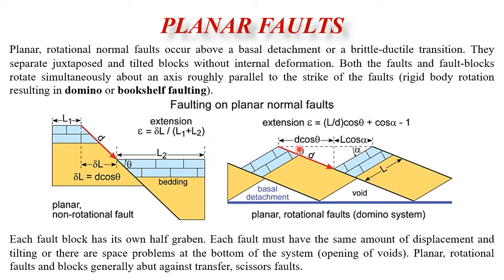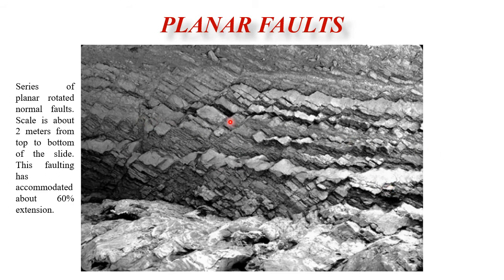In a rotational planar fault (domino system), if the fault dip angle is theta and the dip of strata is alpha, the total extension in distance is d·cos(θ) + L·cos(α), where d is displacement and L is block length. The extension coefficient is (L/d)·[cos(θ) + cos(α)] − 1. This allows quantitative calculation of extension accommodated by domino-style faulting.